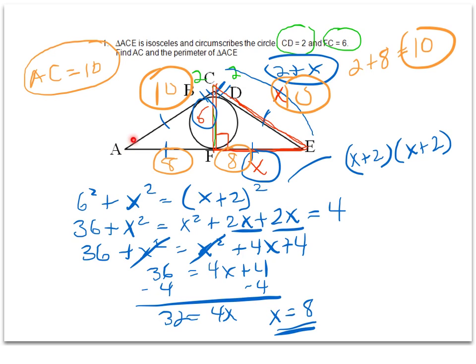And so the perimeter of the triangle, we're just going to add up those values of the sides. It's 10 plus 10 plus 8 plus 8.